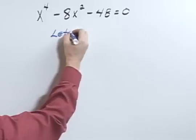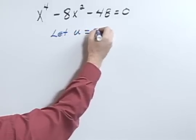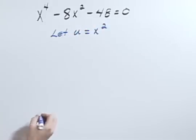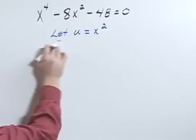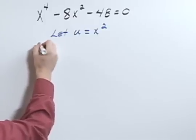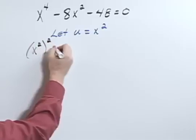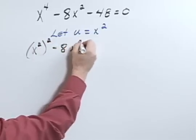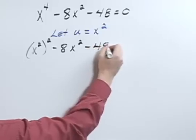And so let's let u equal x squared. That way, when I rewrite this, it could be x squared squared minus 8x squared minus 48 equals zero.